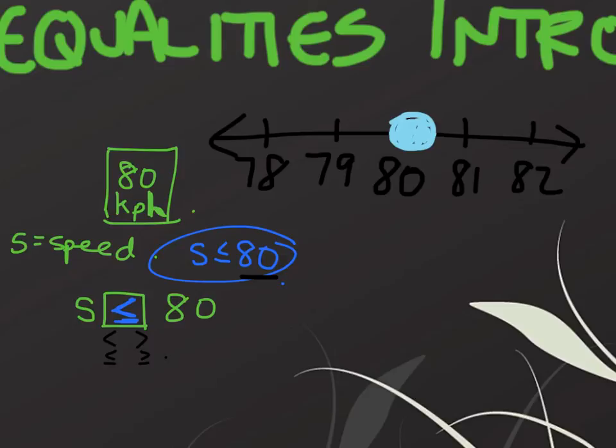Since our solution does include the number 80, it's going to be a closed circle. And that implies that our solution includes that number. And since it's less than or equal to 80, we're going to be drawing an arrow going to the left, just like this.